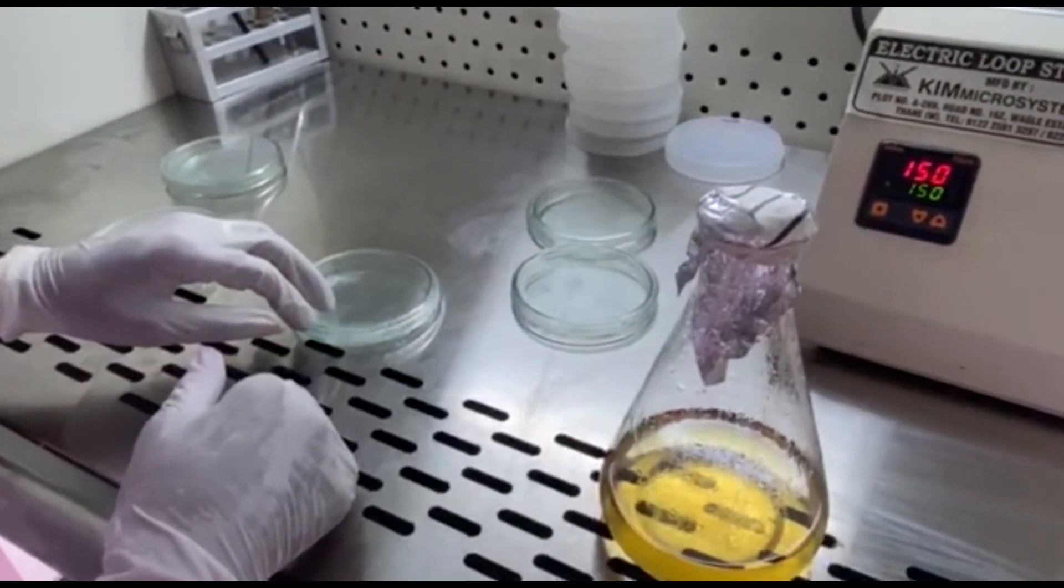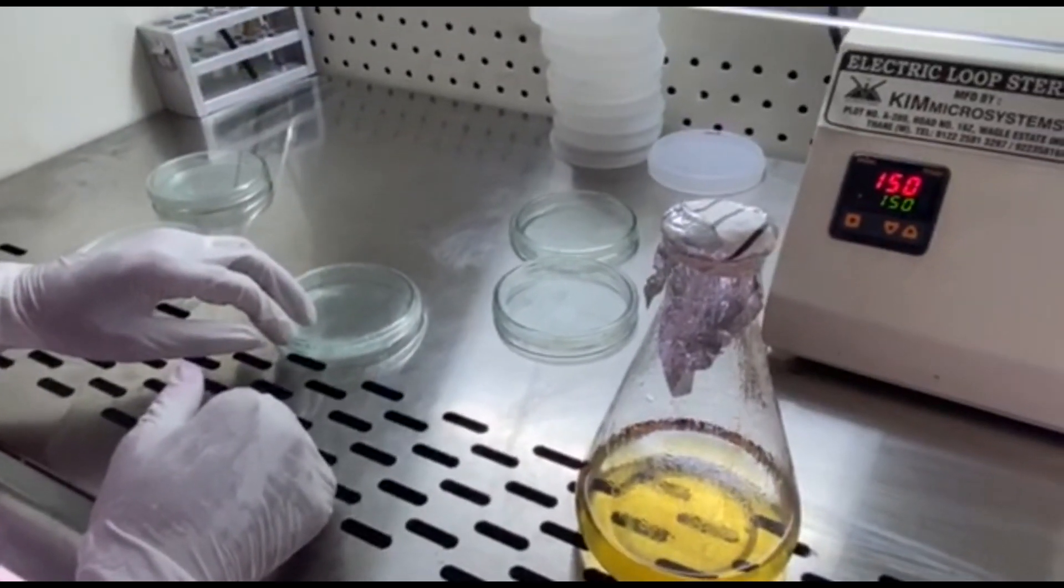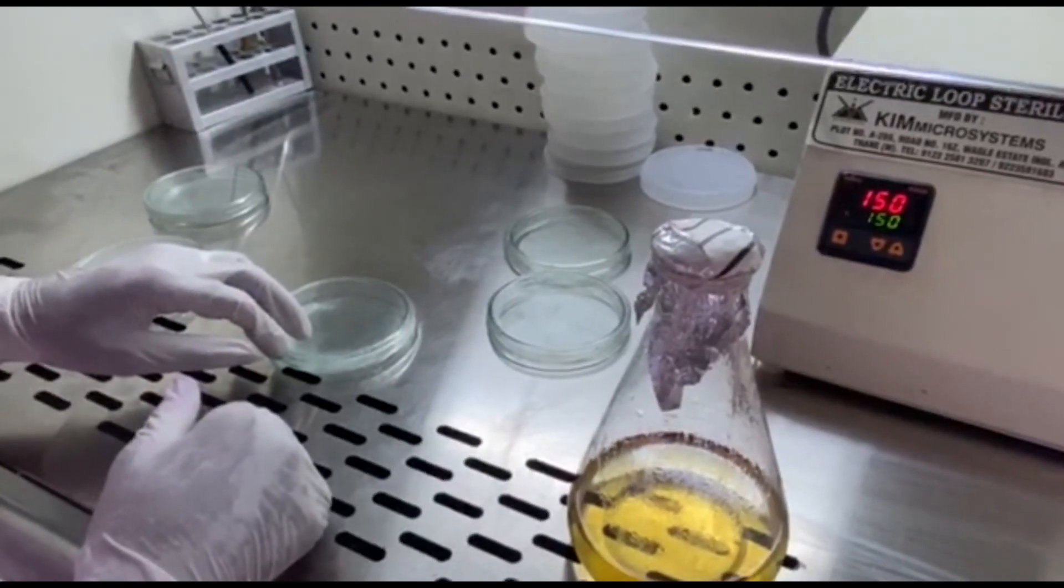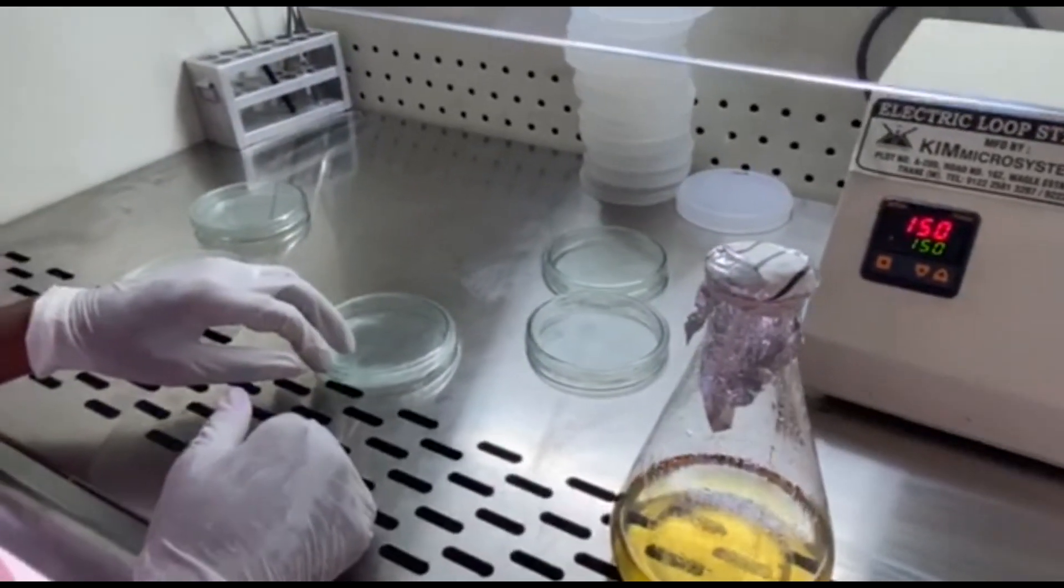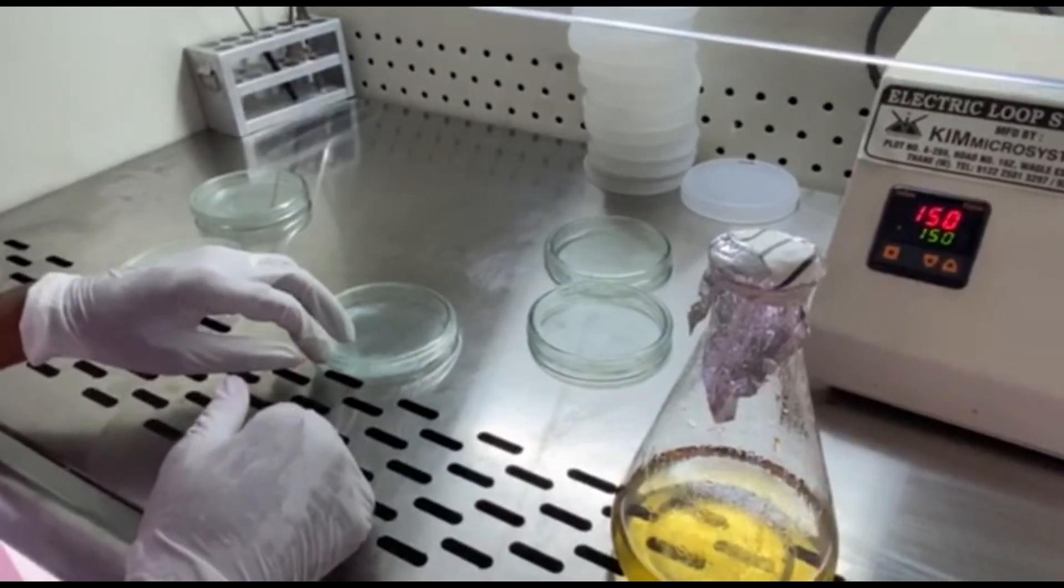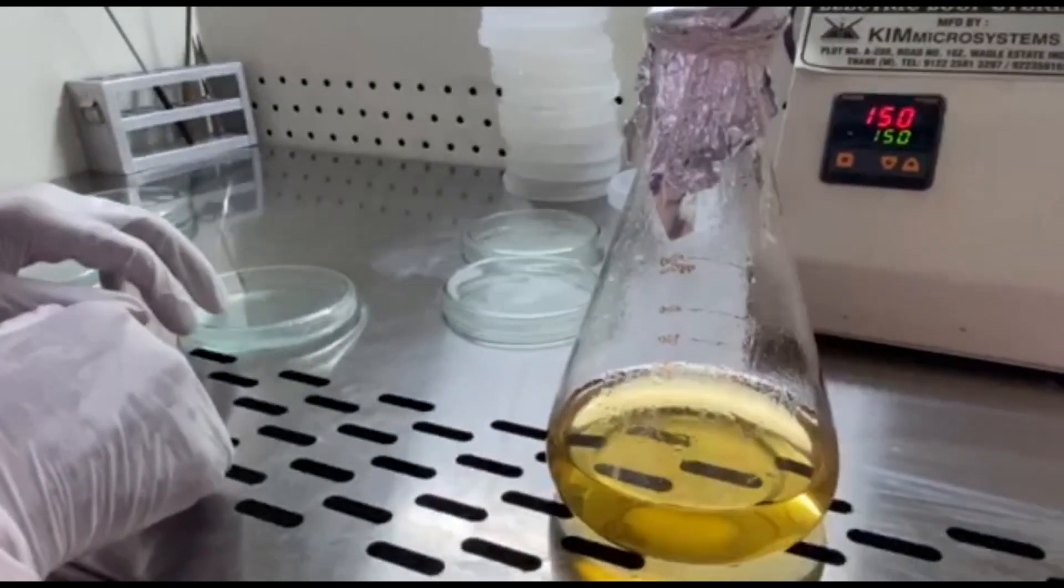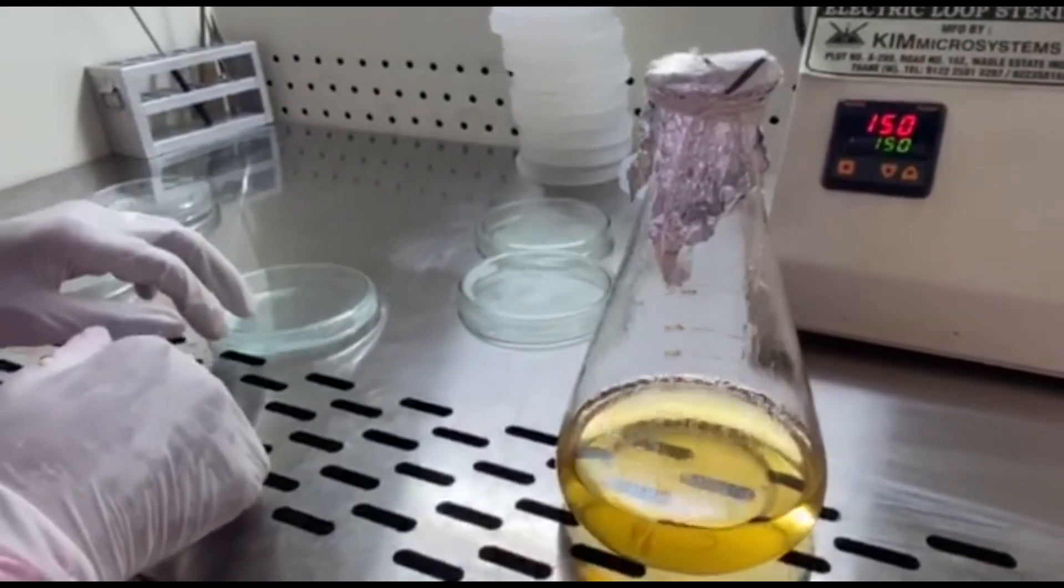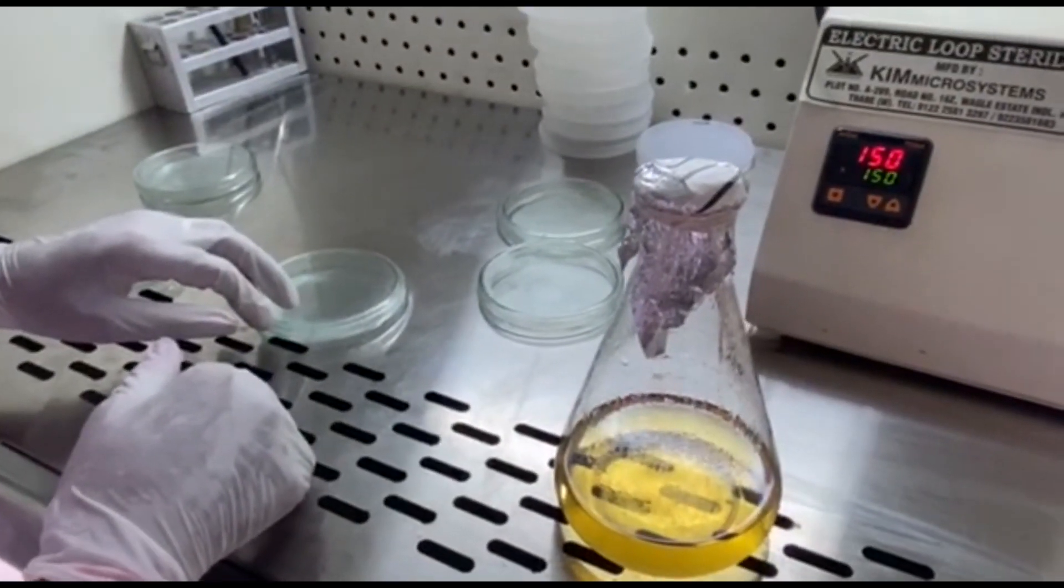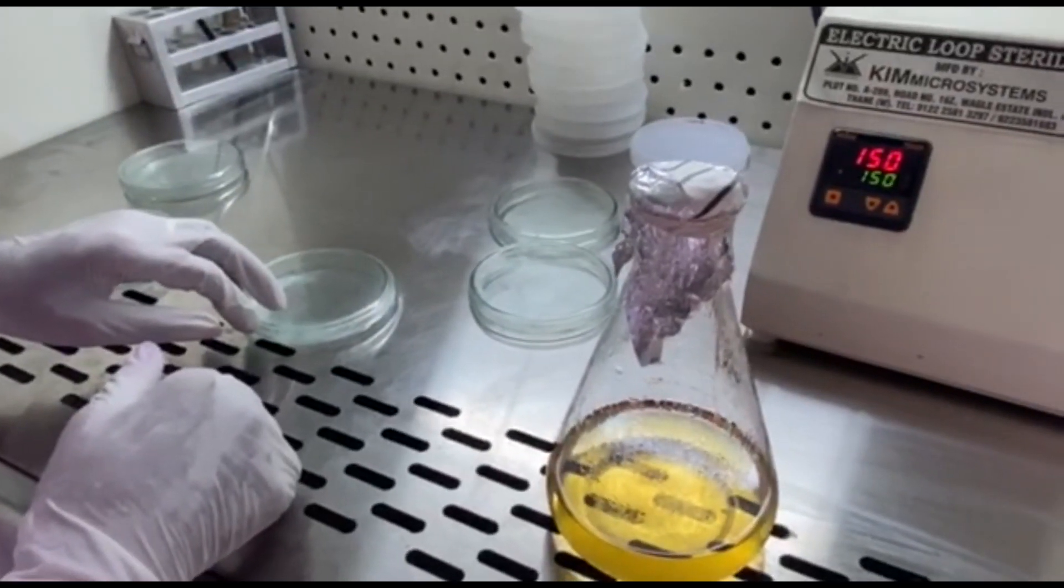Now going ahead with our preparation of blood agar, we have to prepare the base first. The base will be made 2 mm thickness. Why? Because 4 mm thickness is what a basic media height or depth should be. So now this is bilayer, so we will have 2 mm of nutrient agar base. Before going ahead, you need to check the temperature.